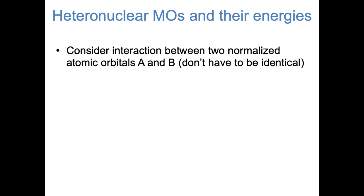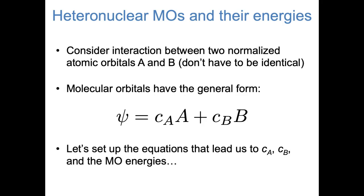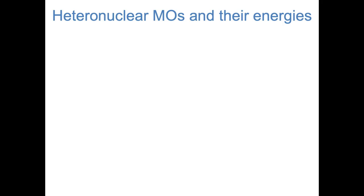In the next few slides, we're going to think about two normalized atomic orbitals mixing with each other to form a bonding and an antibonding orbital. We'll call the atomic orbitals capital A and capital B — maybe they're identical to each other, maybe they're not. As we've seen, molecular orbitals can be expressed as linear combinations — sums and differences — of atomic orbitals. So we'll say that a molecular orbital psi is equal to a coefficient C_A times orbital A plus a different coefficient C_B times orbital B. We're going to set up a system of equations to solve for the unknowns: C_A, C_B, and the molecular orbital energies. On this slide, there's a fair amount of math, but what's most important is to have a qualitative understanding of where these equations are coming from.